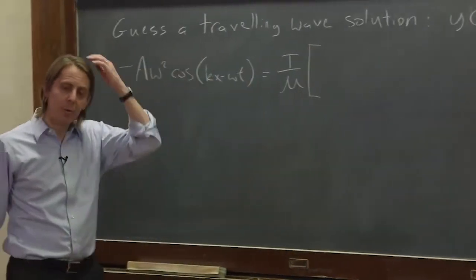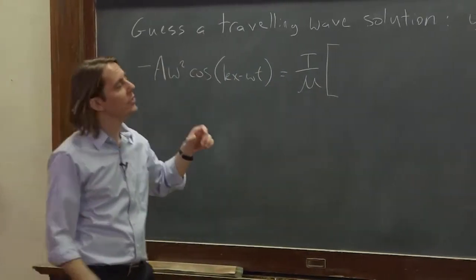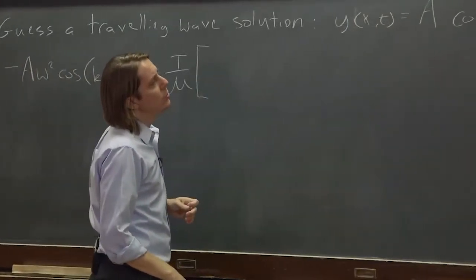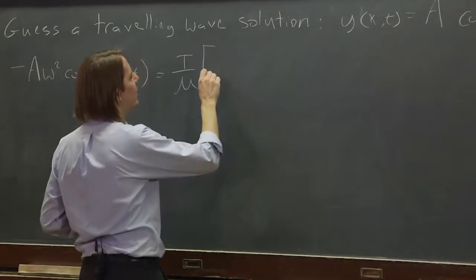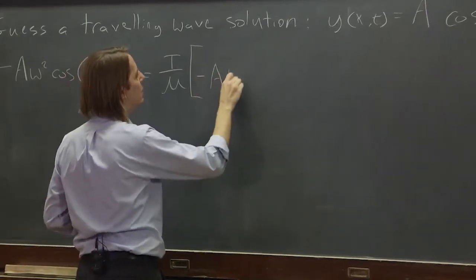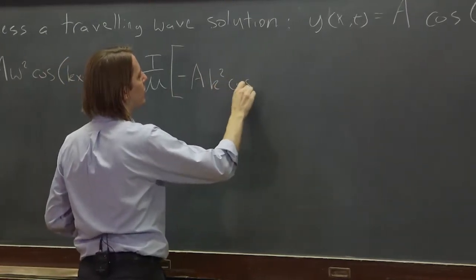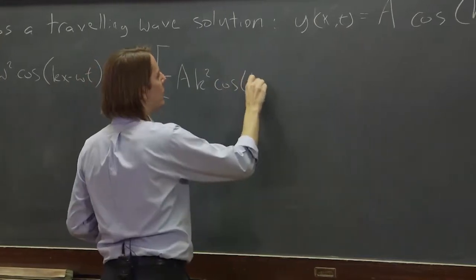and then we had our regular d²y/dx². So two derivatives there is going to pull out k squared, it's going to make it negative, minus A k squared, but back to cosine kx minus omega t.